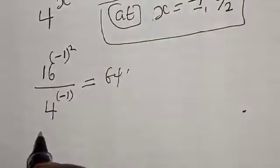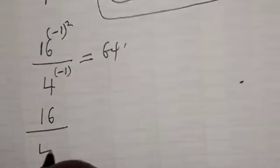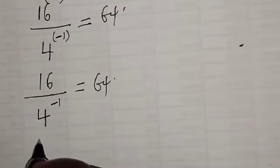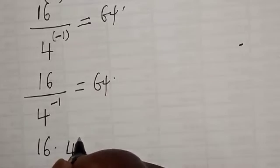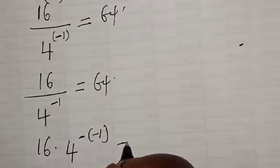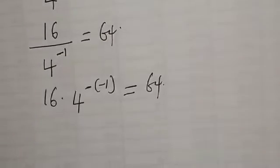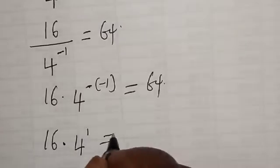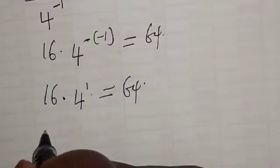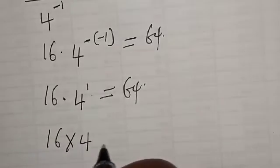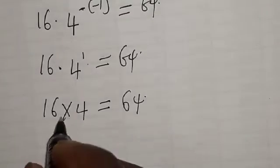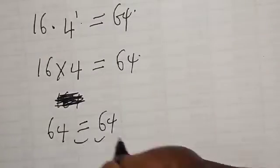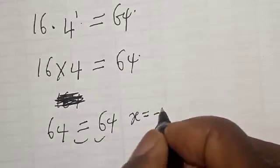At s equals minus 1: minus 1 squared equals 1, so we have 16 raised to the power 1 divided by 4 raised to the power minus 1. This equals 16 multiplied by 4 raised to the power 1, which is 16 multiplied by 4, which equals 64. The left-hand side equals 64 and the right-hand side equals 64. So 64 equals 64, which satisfies the given equation at s equals minus 1.